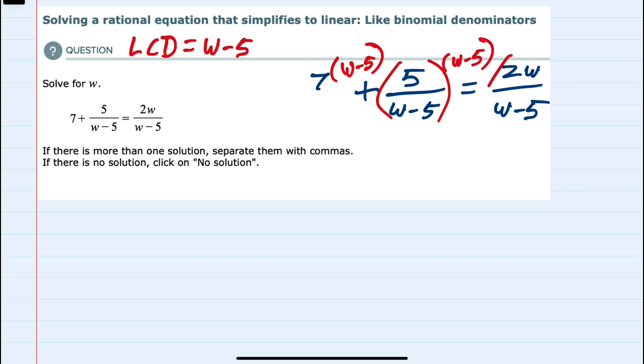The reason we are doing this is because in each one of the situations where we have a fraction, the w minus 5 in the denominator is going to cancel the w minus 5 in the numerator, and that will remove all of the fractions.